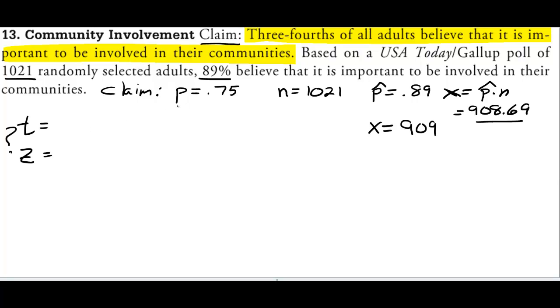Well since we are dealing with p's, proportions, we are doing z's. So the formula for our test statistic is very simply p hat minus p all over the square root of the standard deviation which in this case is pq over n.